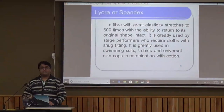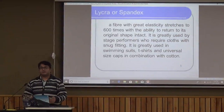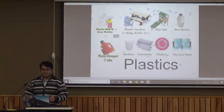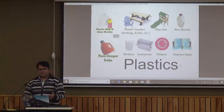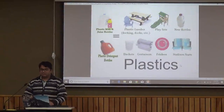Lycra or spandex is a very common substance nowadays which we see around us. It is used to make clothes, socks, etc. Plastics can be used to make play sets, bottles, seats, frisbees, containers, buckets, etc.